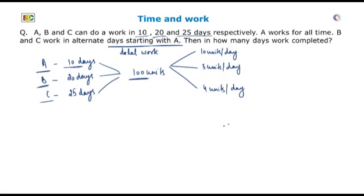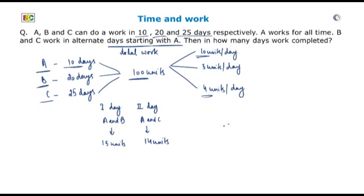It is given that A works all the time and B and C work on alternate days starting with B. So on the first day A and B together will complete 10 plus 5, that is 15 units. On the second day A and C together will complete 10 plus 4, that is 14 units. This cycle will keep continuing till 100 units of work is achieved. They can complete 15 plus 14, that is 29 units in 2 days.